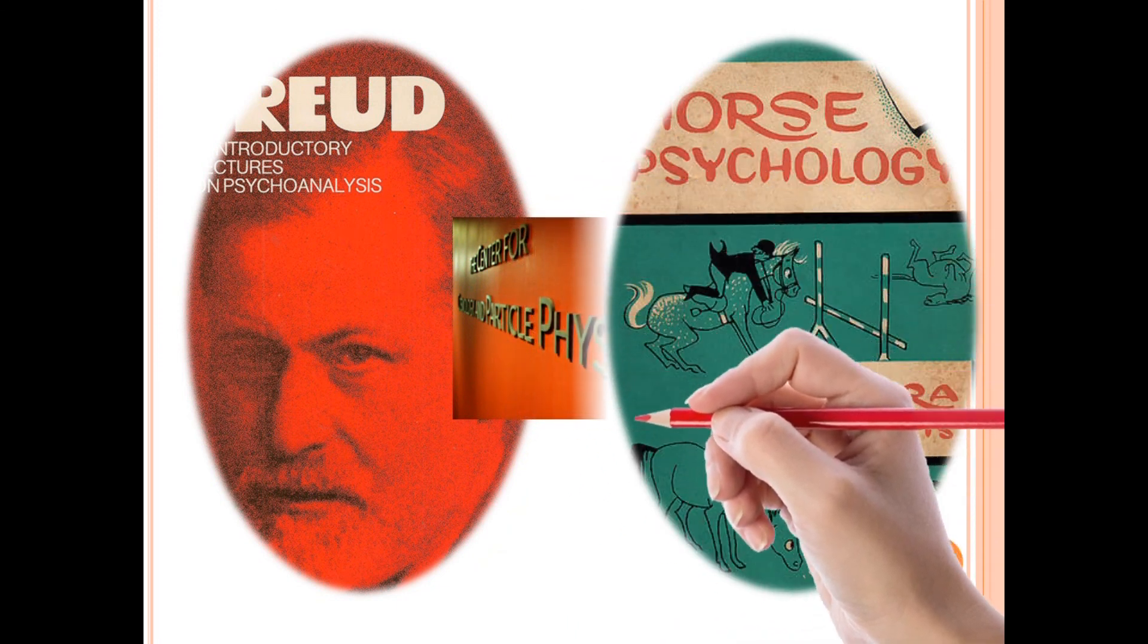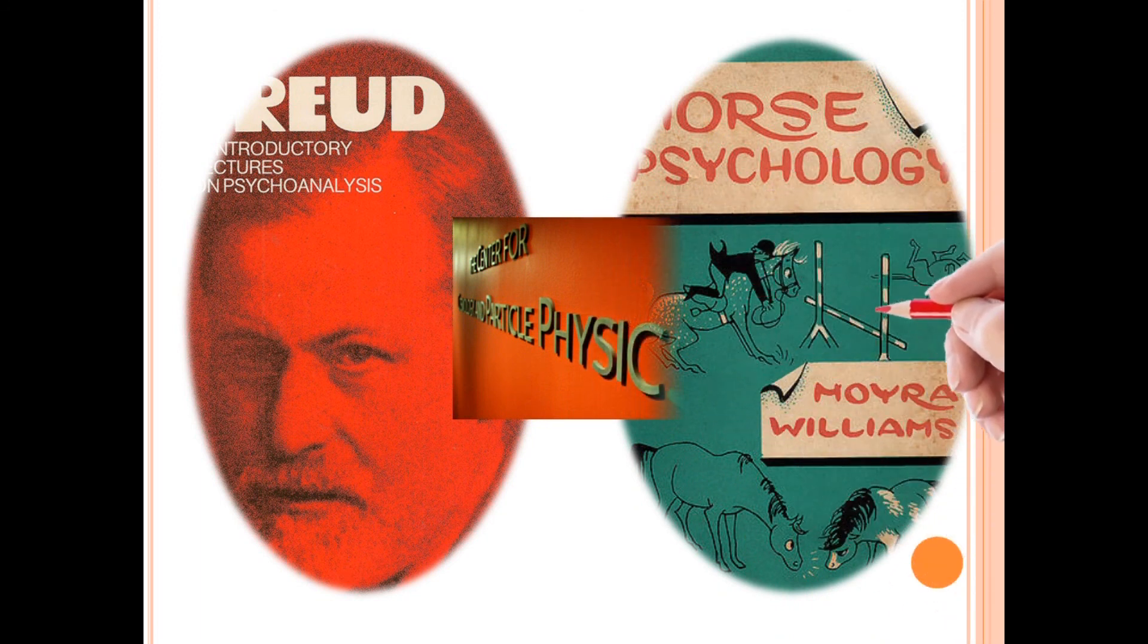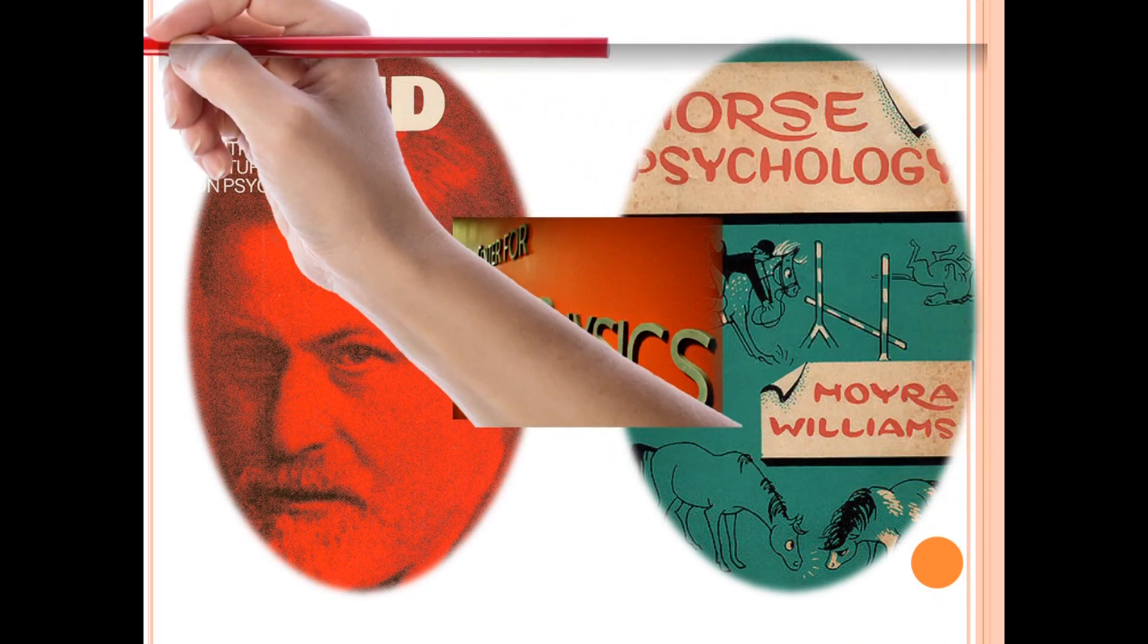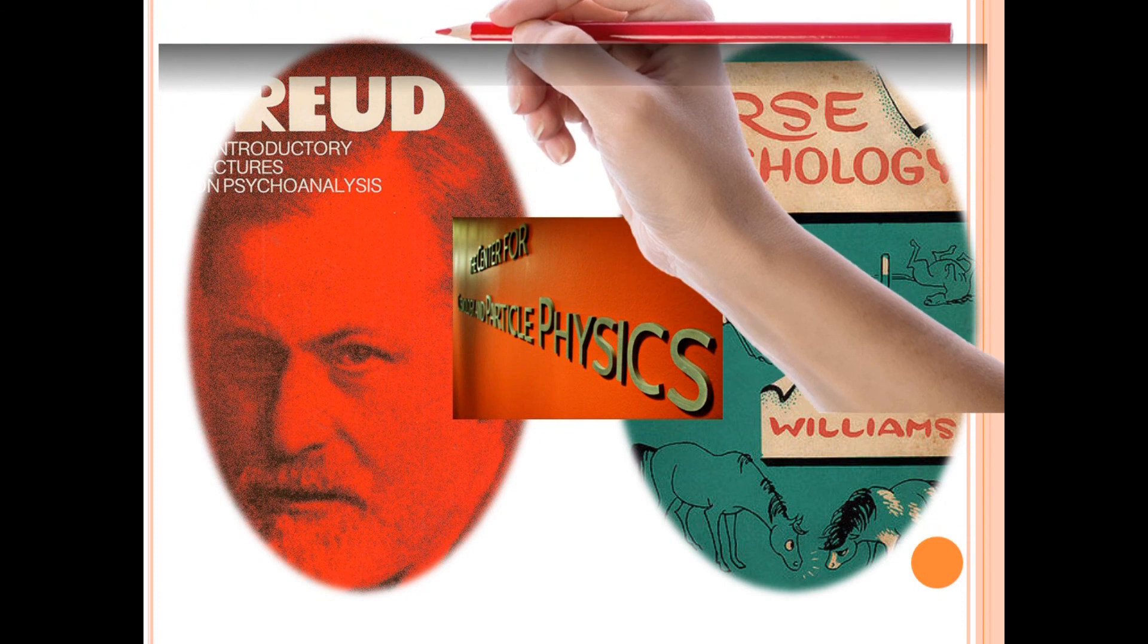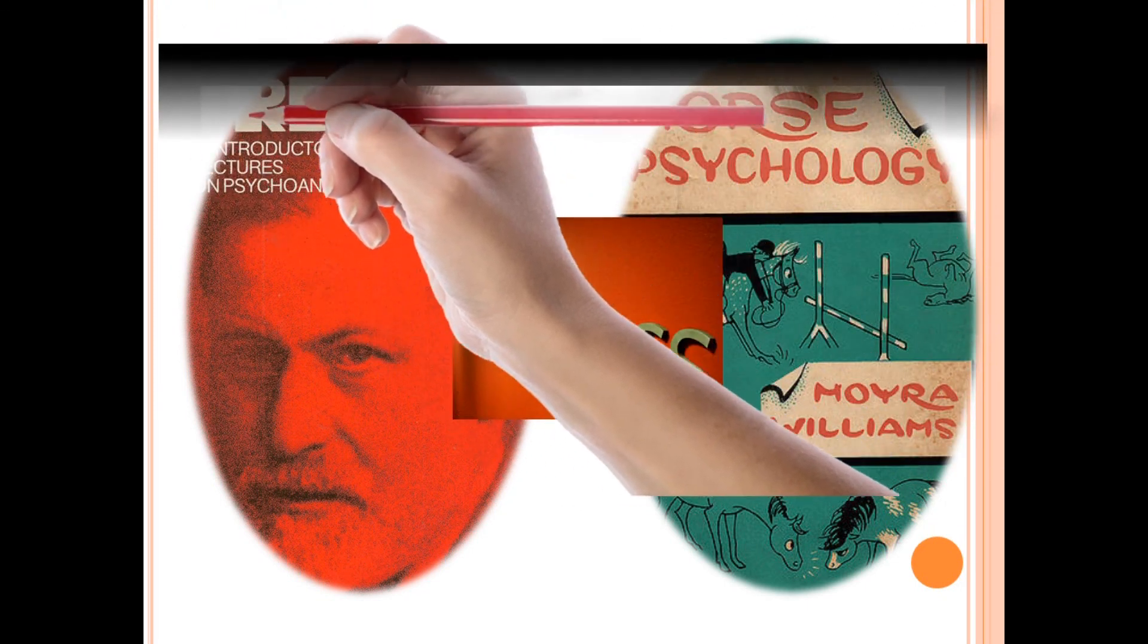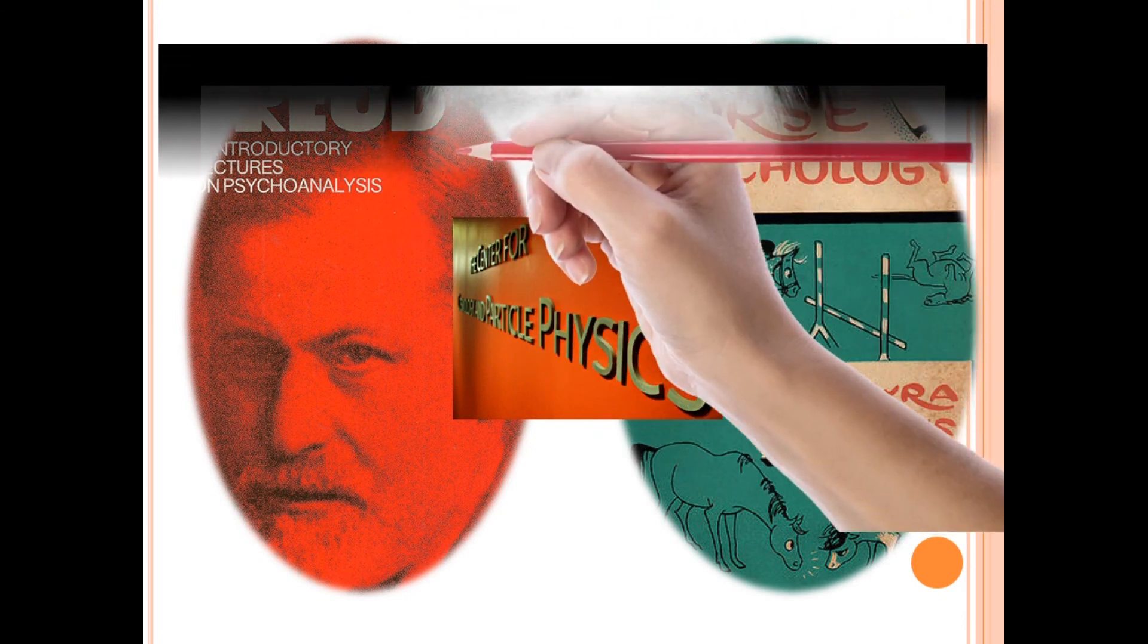Denial, the blocking of painful information from consciousness. For example, not accepting that a loss has occurred. Projection, the denial of one's own unconscious impulses by attributing them to another person. For example, when you dislike someone but believe it is the other person who does not like you.